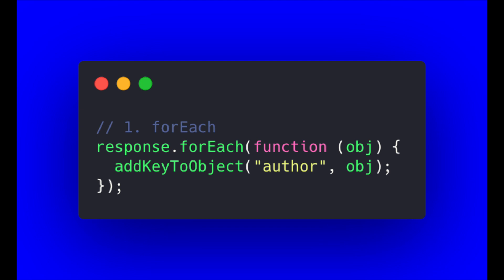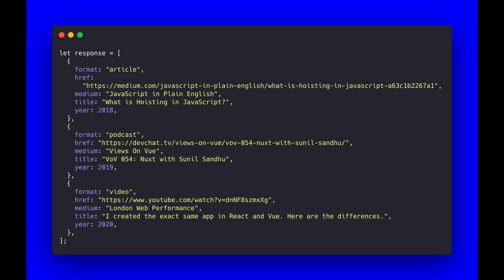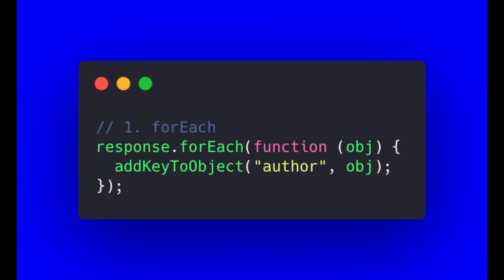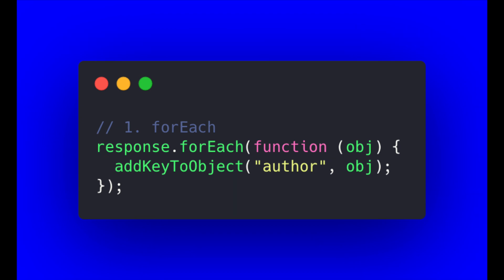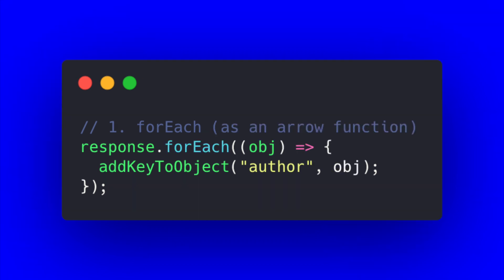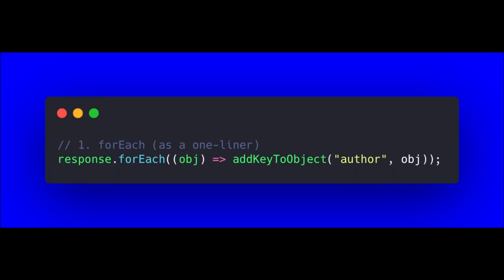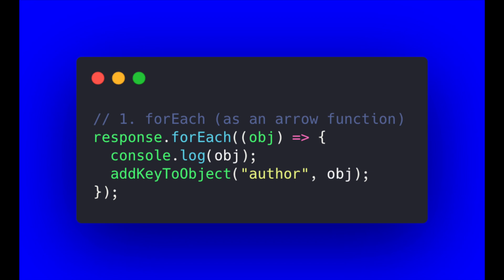For our forEach function, all we do is take the response variable and attach forEach at the end of it. We then initialize a function inside of it — this is what we mean by a higher-order function, because it takes a function inside of it. We pass in one parameter of object, or obj for short, and run the add key to object function. Using ES6 arrow functions, we can shorten this to a one-liner, though if your forEach needs to handle multiple operations — for example, if we also wanted to console log the object — you'd need the multi-line form.